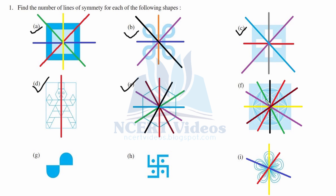Part F: this is again the same thing — we have six lines of symmetry because the inside figure in this hexagon is also symmetrical. Part G has no symmetry; if you make a vertical line you will not be able to get the corresponding figure on the other side.